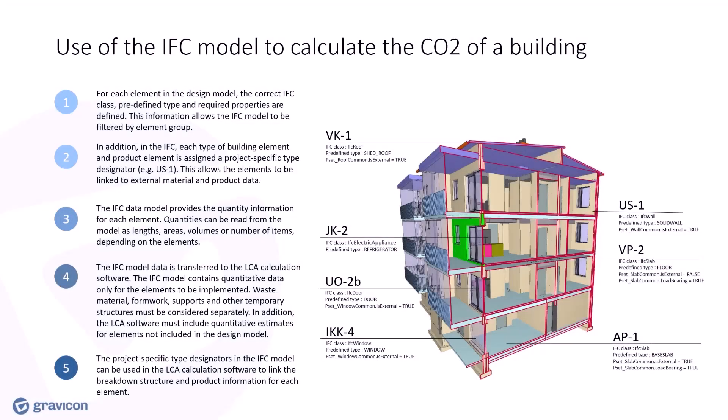The architectural design closely followed the specifications of the international IFC standard ISO 16739 part 1. This was done to ensure that the outputs of different programs were consistent. For each element in the design model, the correct IFC class, predefined type, and the required properties were defined. This information allows the IFC model to be filtered by element group. In the IFC, each type of building element and product element is assigned a project-specific type designator, allowing elements to be linked to external material and product data. The IFC data model provides quantity information for each element — lengths, areas, volumes, and number of items depending on the elements.